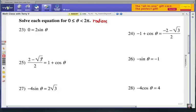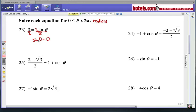Alright, in number 23 we have to get sine theta by itself. Obviously that means we're going to have to divide by 2. Alright, now 0 divided by 2 of course is still 0, so sine theta has to be 0.